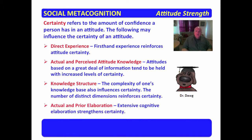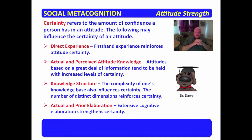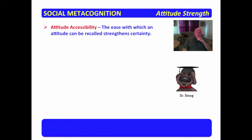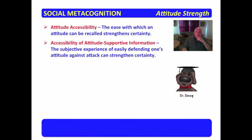Actual and prior elaboration: elaboration is extensive thought about the attitude. Extensive cognitive elaboration strengthens certainty — the more I have thought about it, the more I have considered it, the more I have weighed it, the more likely I am to believe that the attitude is certain. Attitude accessibility and the accessibility of attitude-supportive information go hand in hand. The ease with which an attitude can be recalled strengthens certainty.